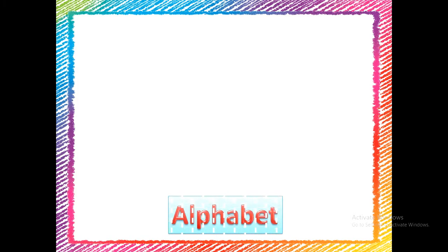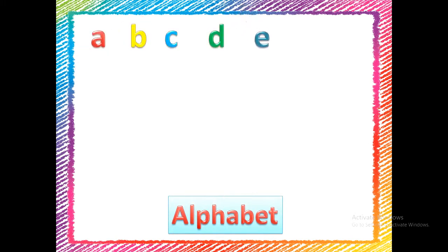Alphabet — A, B, C, D. These are the small letters of the English alphabet.